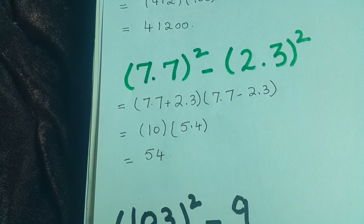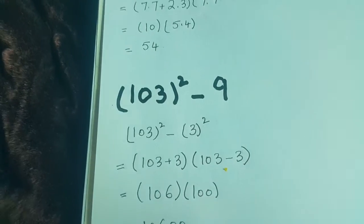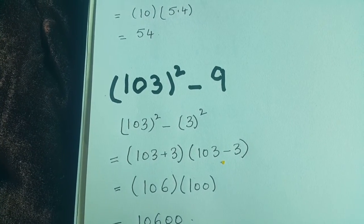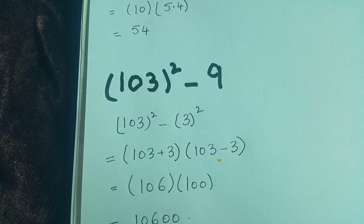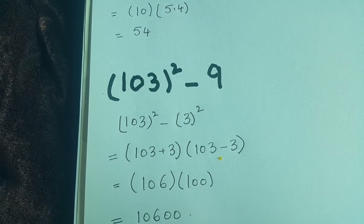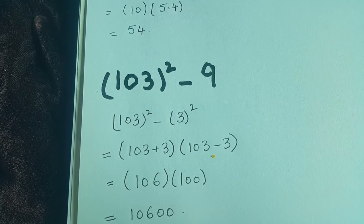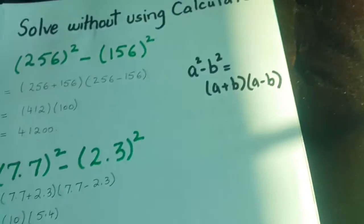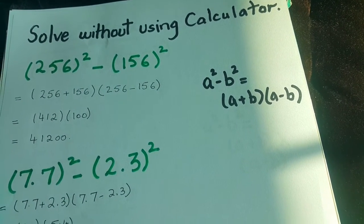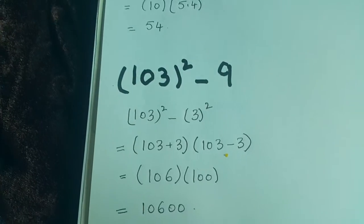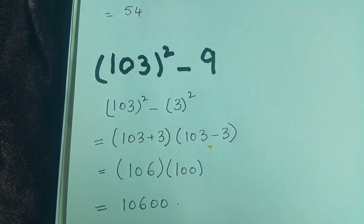The third answer is a little bit tricky: 103 whole squared minus 9. Now 9 is the square of 3, so we will write 103 squared minus 3 squared. Again, we will use the formula a squared minus b squared, which is equal to a plus b into a minus b. We will write 103 plus 3 and 103 minus 3.